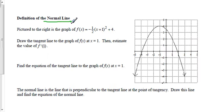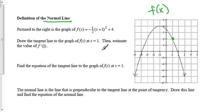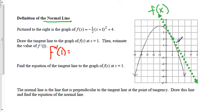Now we're dealing with the normal line — for those taking physics, you've seen this. There's a graph of a quadratic given in vertex form. We draw the line tangent to the graph of f(x) at x = 1. The tangent line intersects the graph at one point and its slope represents the value of the derivative. We estimate f'(1), which is the slope of that tangent line.